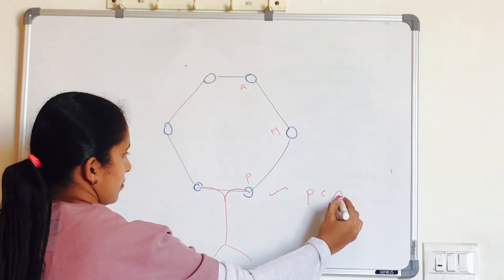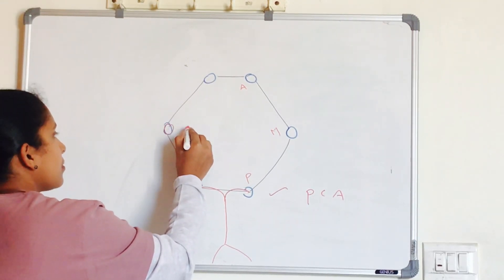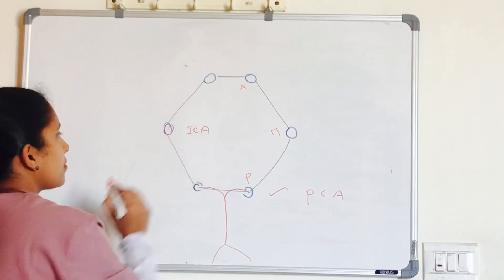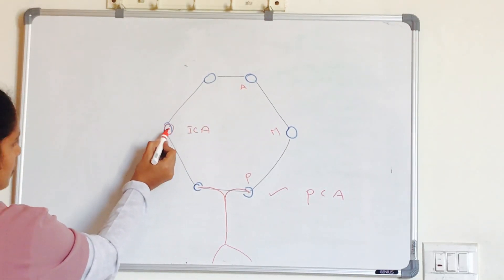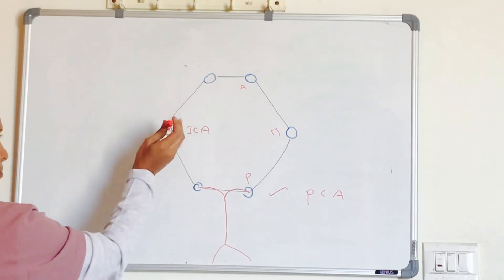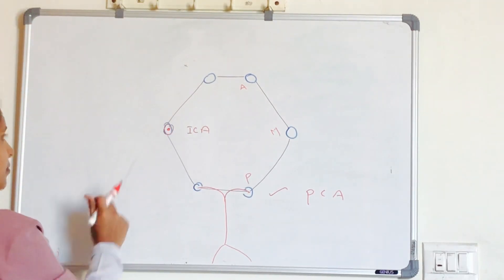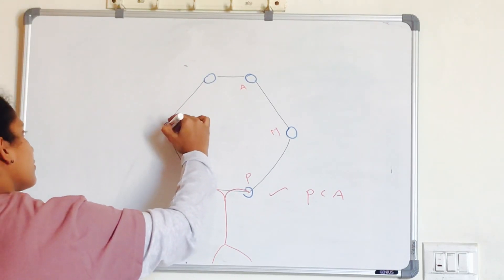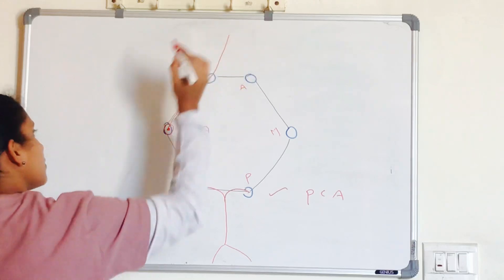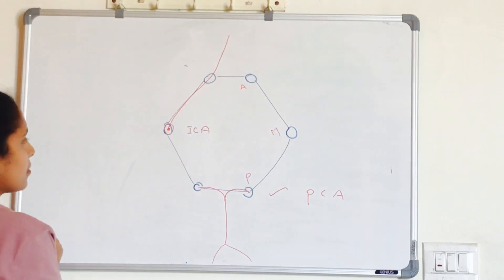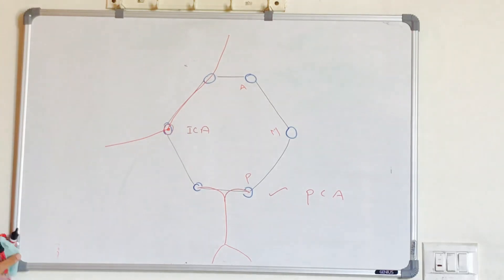Here you have two posterior cerebral arteries. That one is your internal carotid artery. The artery appears like this because its course is at right angles to this picture. When you take a cut section, the artery appears like a lumen. This internal carotid artery gives the anterior cerebral artery and middle cerebral artery.